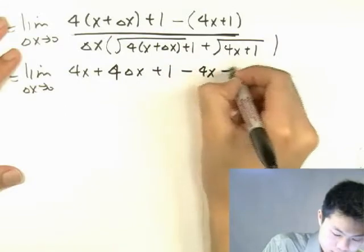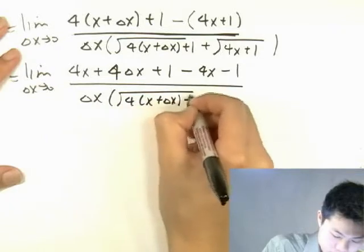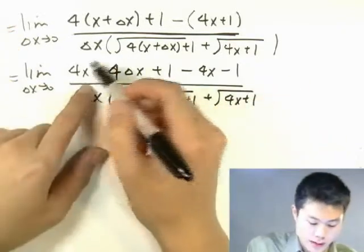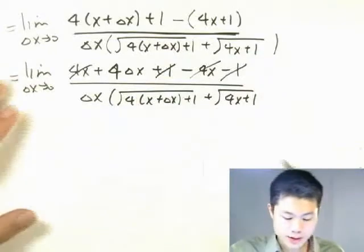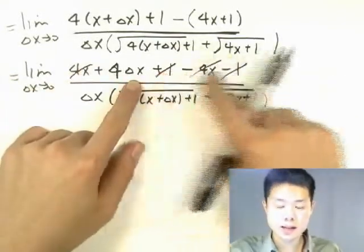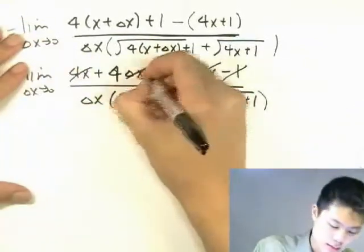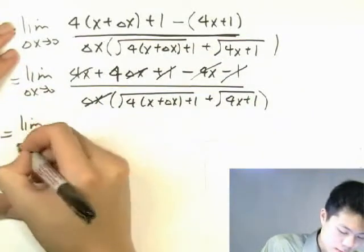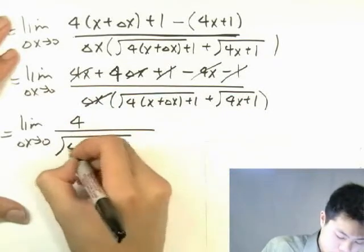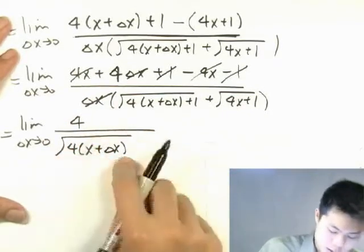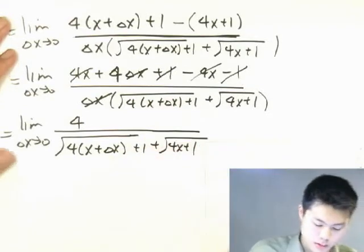So we'll distribute the four on the inside. Four x and negative four x cancel, plus one minus one cancel. So what do we have left? We have four times delta x in the numerator and delta x times this thing in the denominator. We can cancel out the delta x's.